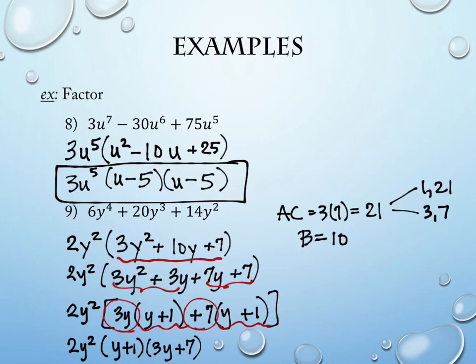If you don't want to use the AC method, that's fine — but it's there if you want it. We do have a quiz next time, so make sure you've memorized any formulas presented in class, like difference of squares and perfect square trinomial.